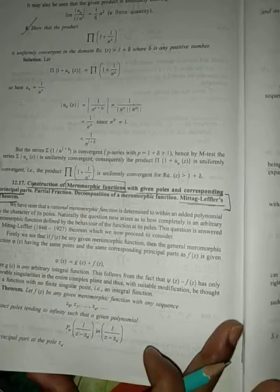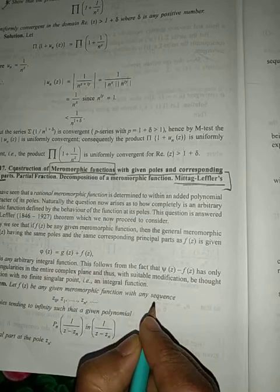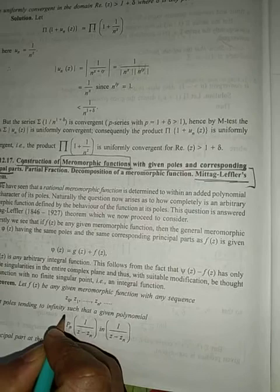Now the theorem is if f(z) be any meromorphic function with any sequence z₀, z₁, zₙ of distinct points tending to infinity such that a given polynomial pₙ(1/(z-zₙ)) means pₙ is polynomial in you can write pₙ(1/(z-zₙ)).